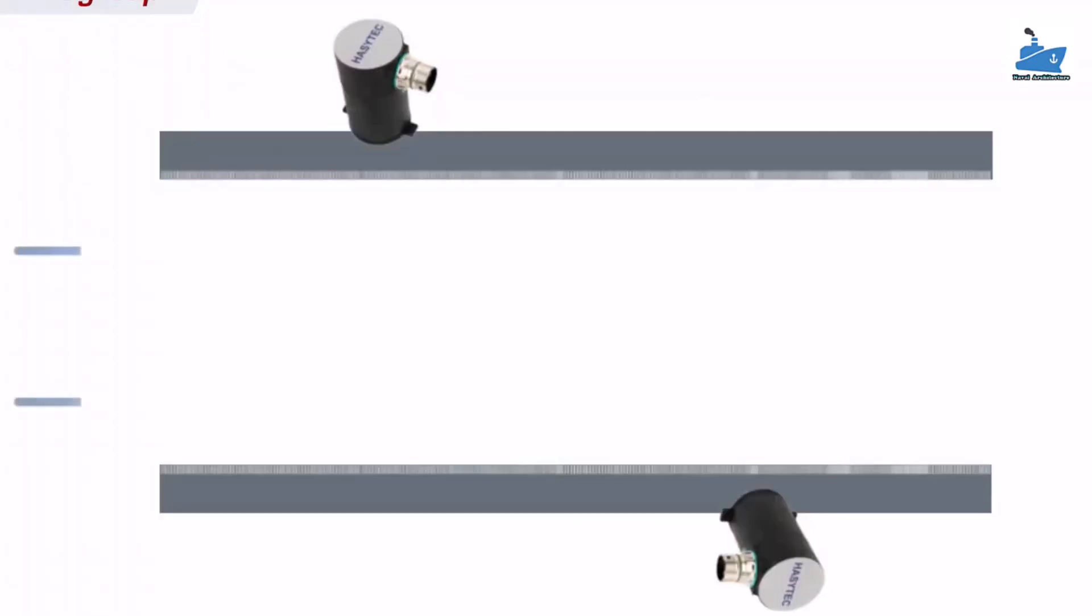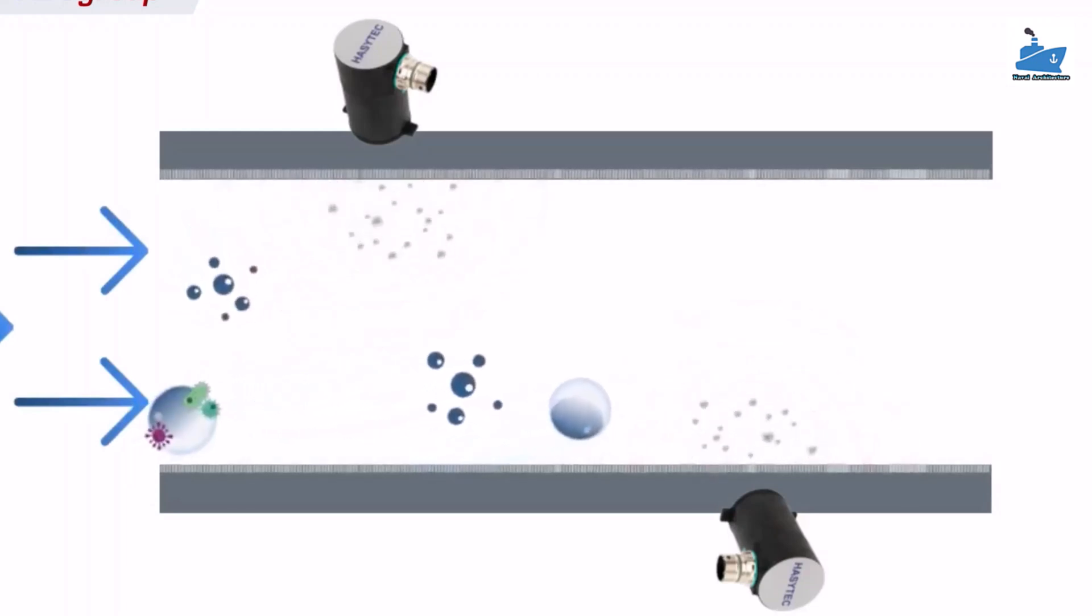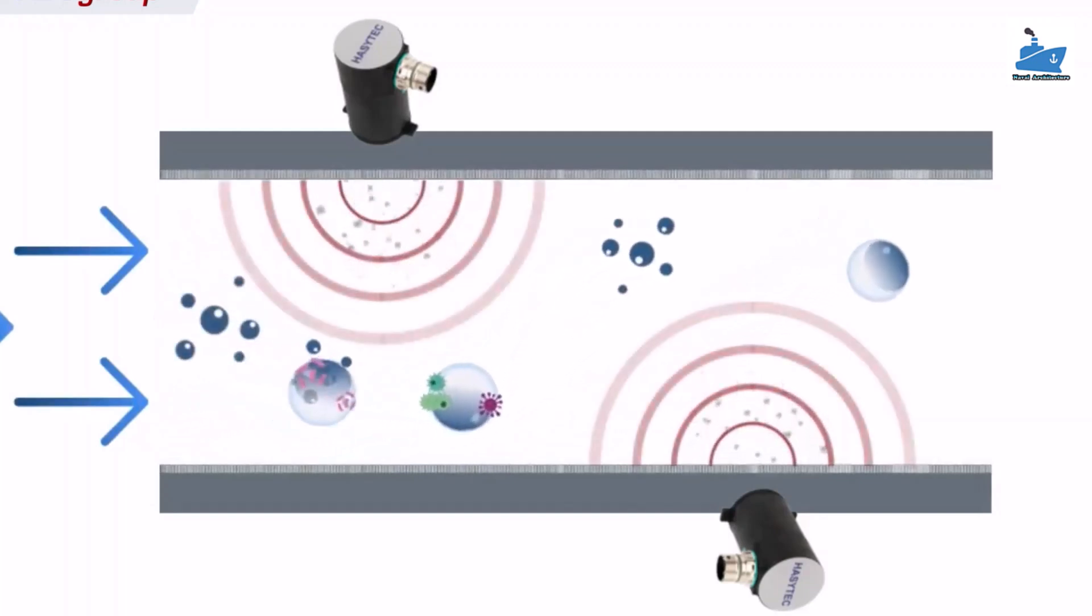The pulses produce a pattern of alternating positive and negative pressure cycles on the surface of the material. Microscopic bubbles are created during the negative pressure cycle and are imploded during the return positive pressure cycle.